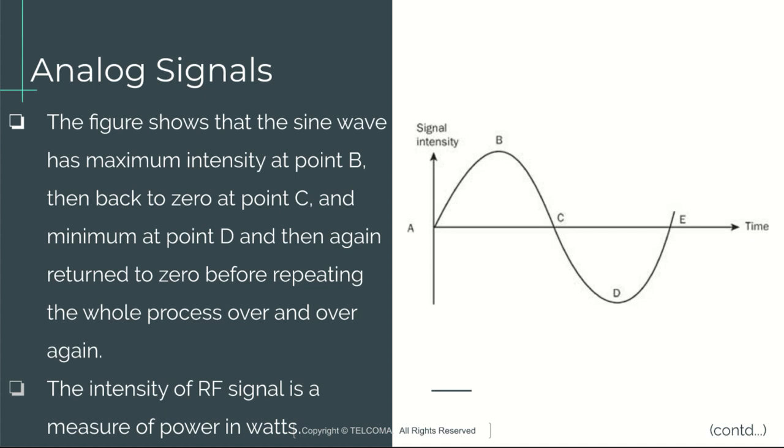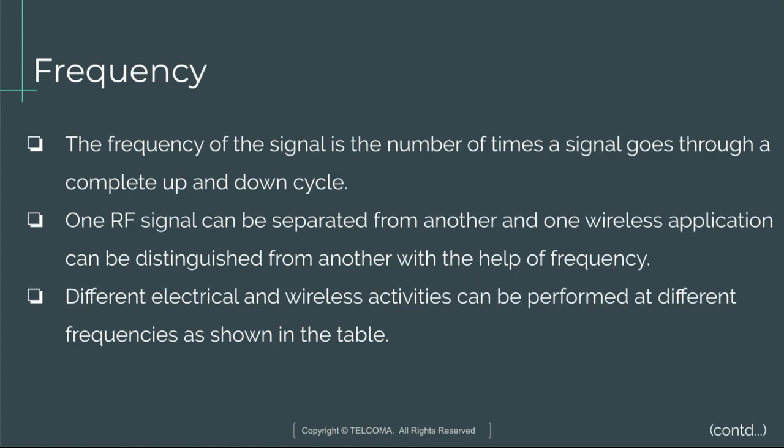The intensity of an RF signal is a measure of power in watts. Next is frequency. The frequency of a signal is the number of times a signal goes through a complete up-and-down cycle. One RF signal can be separated from another, and one wireless application can be distinguished from another, with the help of frequency.